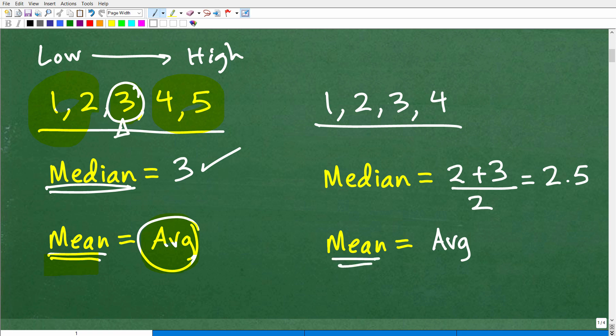All right, now what happens though, if we're given a data set like this, 1, 2, 3, 4? Well, again, let's just make sure if I told you to find the mean, again, that would be the average, right? So we just calculate the average, 1 plus 2 plus 3 plus 4, then we would divide by 4. That's, again, the average. Don't confuse this. A lot of people do.